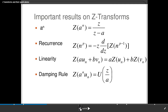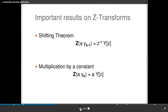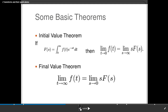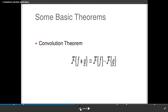The damping rule states that Z{a^n · u(n)} = U(z/a). The shifting theorem states that Z{a·y(k−1)} = z^(−1)·Y(z), and multiplication by a constant gives Z{a·y(k)} = a·Y(z). Some basic theorems already discussed include the initial value theorem, final value theorem, and convolution theorem.